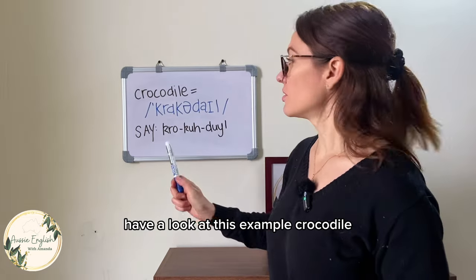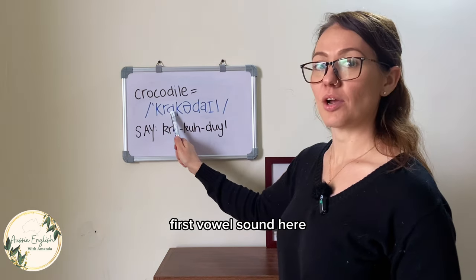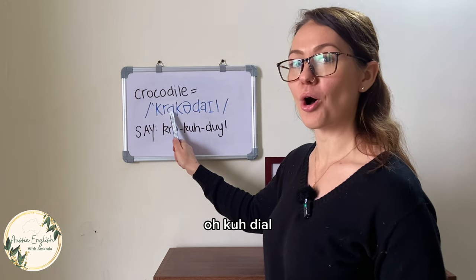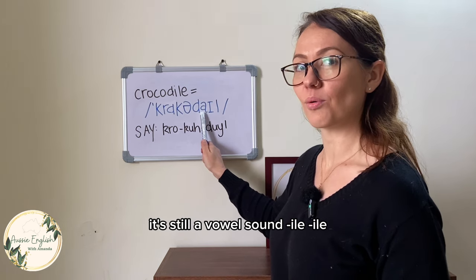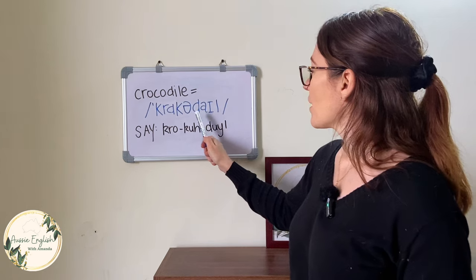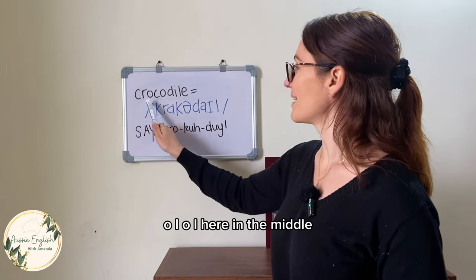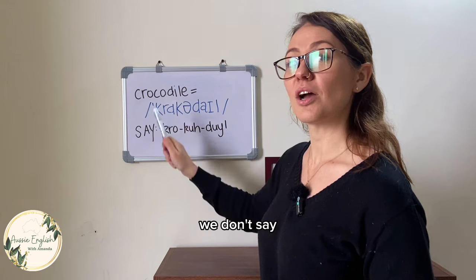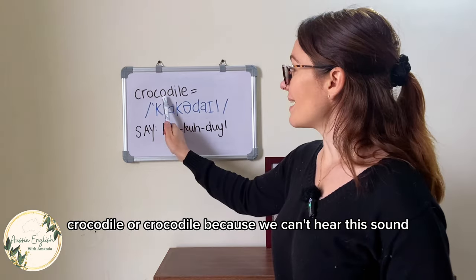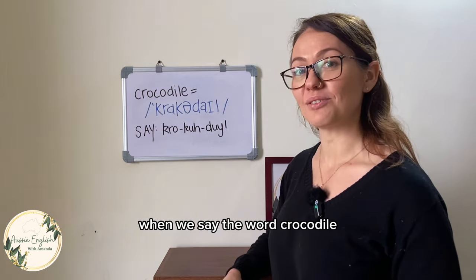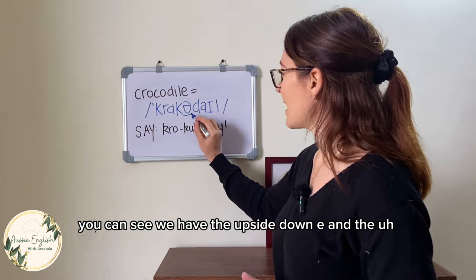Let's have a look at this example: 'crocodile' — three syllables: cro-co-dile. The first vowel sound is a short O. The last syllable has a diphthong, so it's still a vowel sound: I-l. In the middle syllable, we don't say 'cro-CO-dile' — because we can't hear that vowel sound clearly. That's where the schwa sound most likely is. You can see we have the upside down E — cro-cuh-dile.